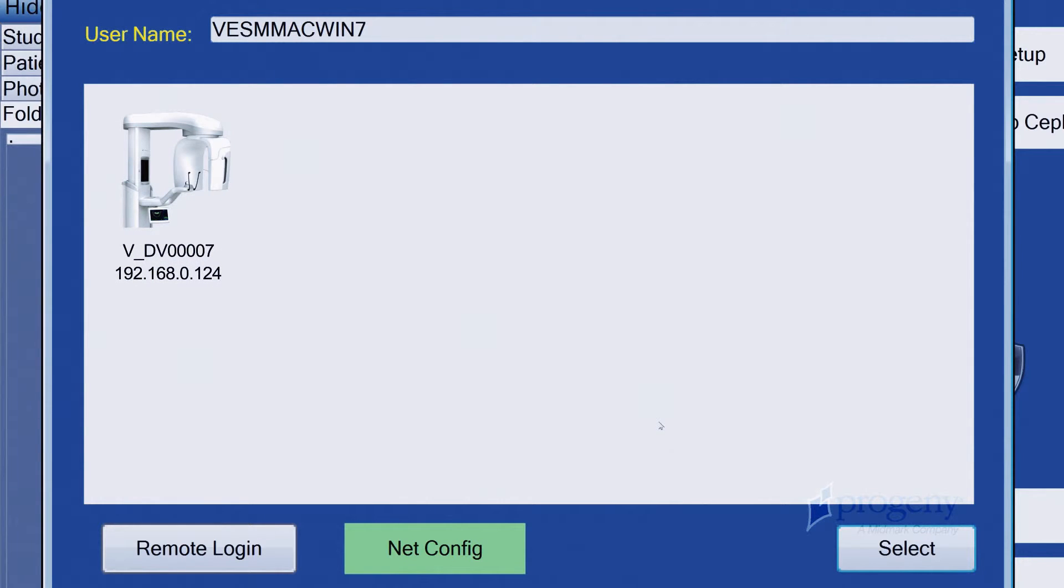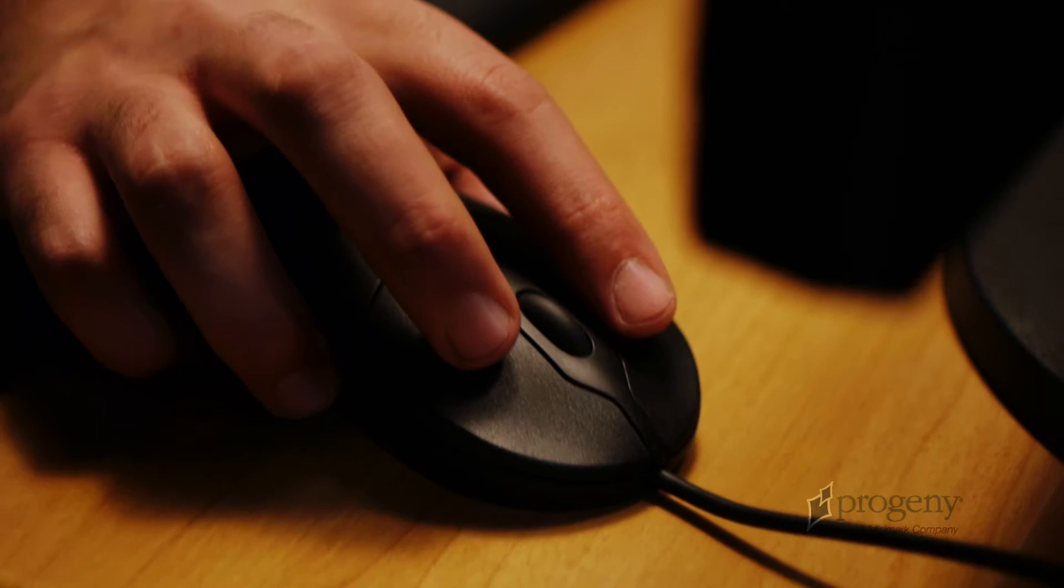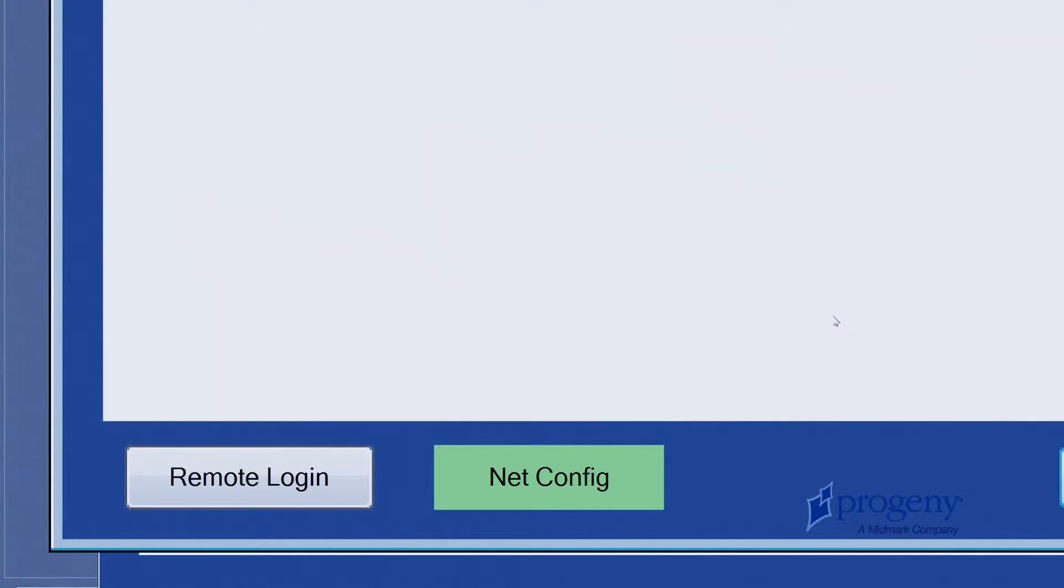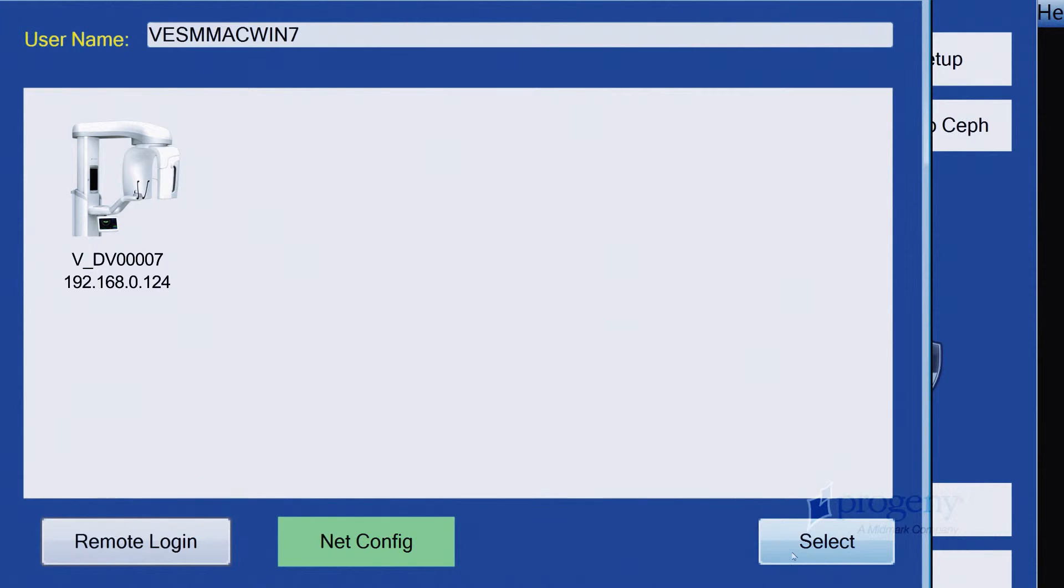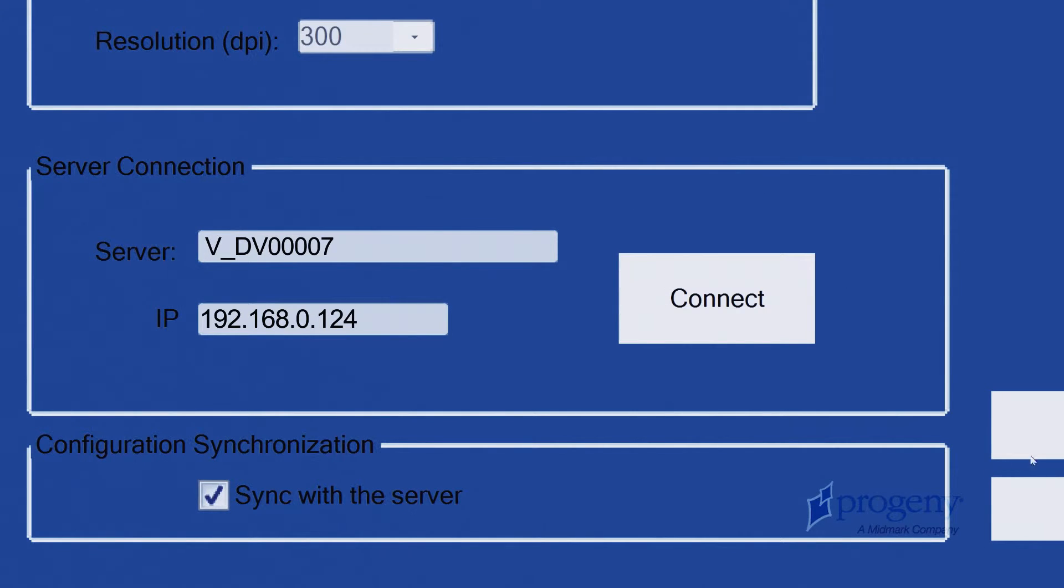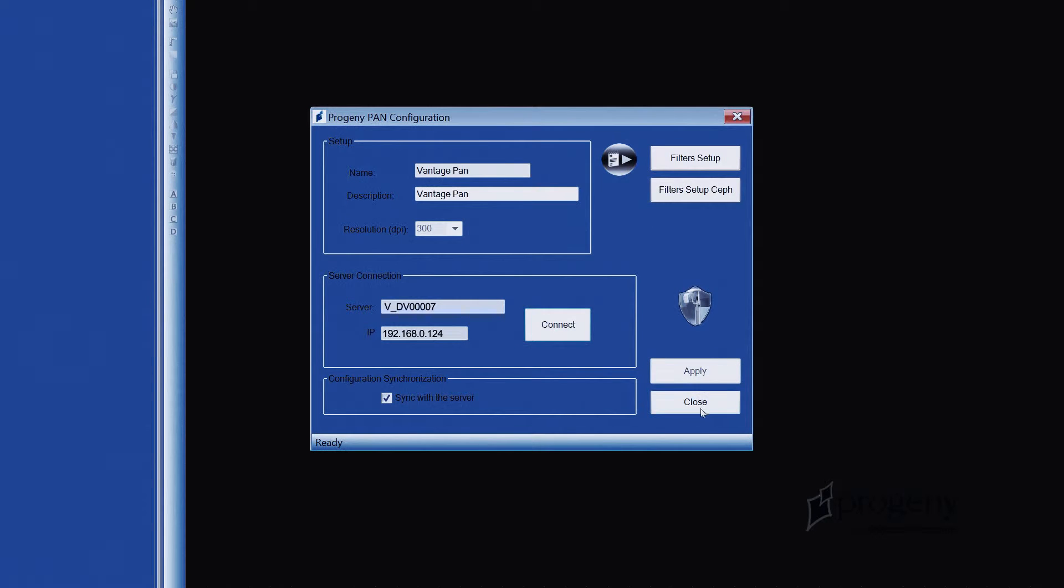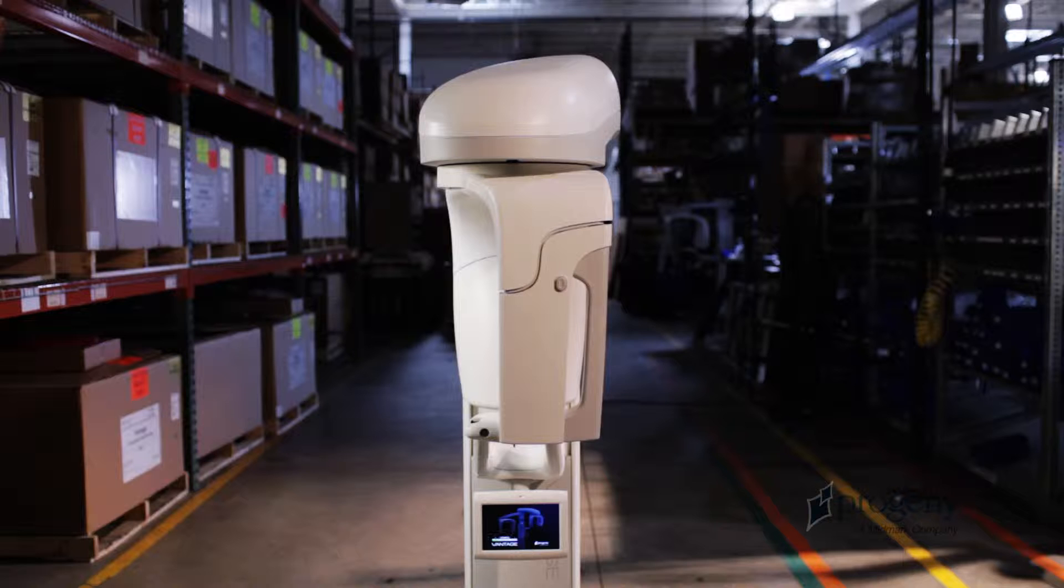Click the Connect button. The Select Pan Server window will automatically discover any vantages on your network. Highlight the vantage you want to connect to and click the Select button. If your vantage is not automatically discovered, click the Net Config button to select a specific network adapter. The selected vantage will now be visible in the Server Connections section. Click the Close button to complete the connection.